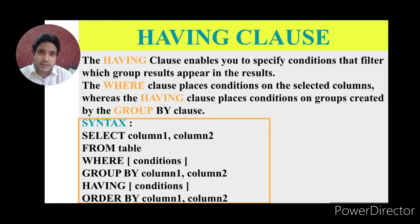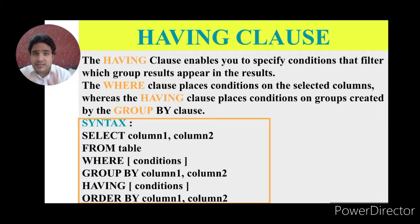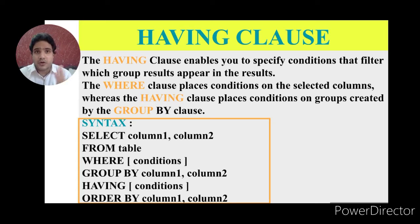But HAVING clause contains the conditions applied to columns having groups. Both clauses contain conditions, and the difference is that HAVING clause is used to contain the conditions applied to columns having groups. What are groups? You know very well by using the GROUP BY clause.